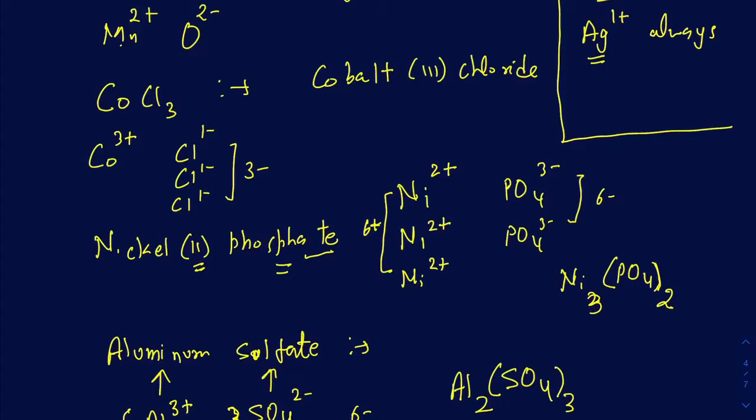To summarize: there are only two rules when naming ionic compounds. Focus on where the metal comes from. If it's from the fixed-charge group, just write the name of the cation and the anion. If it's a transition element, specify the charge on the metal using Roman numerals in the name. Hopefully this was helpful — I have another video posted for covalent compounds. See you next time!